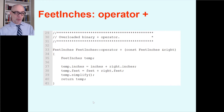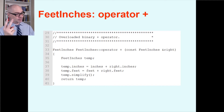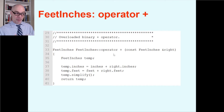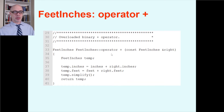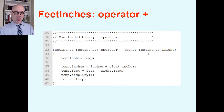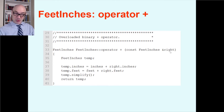Here we're expanding the FeetInches example — a class to store measurements in feet and inches with two members: feet and inches, with 12 inches per foot. We're overloading the addition operator: the function is FeetInches::operator+(const FeetInches& right). It takes a constant FeetInches reference called 'right' because that's what's to the right of the plus sign. We return a FeetInches object.